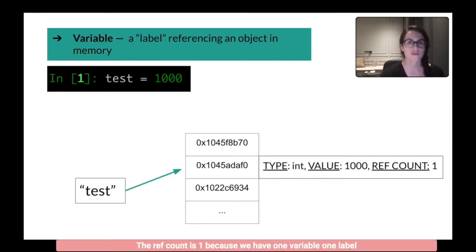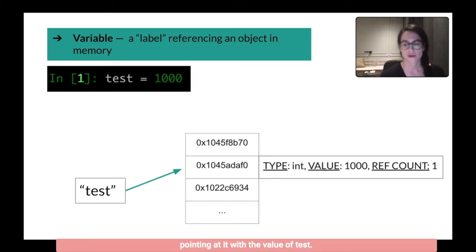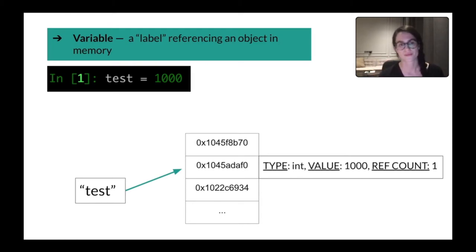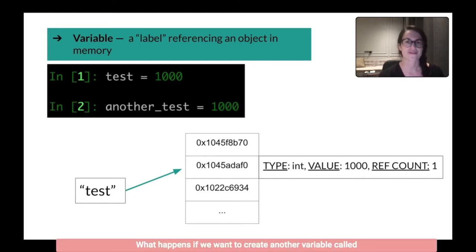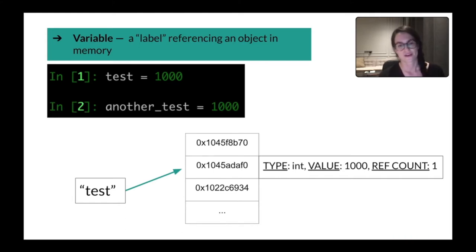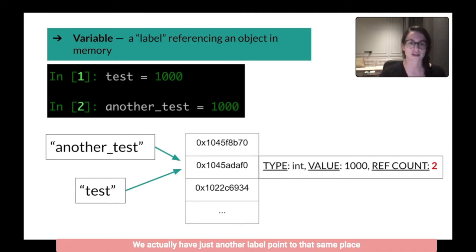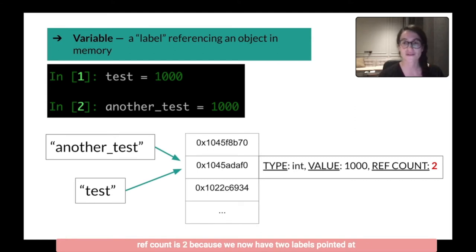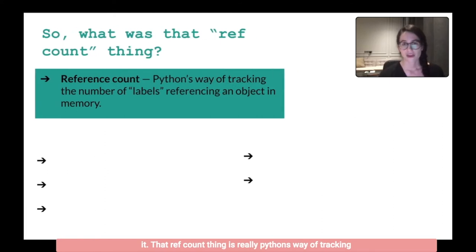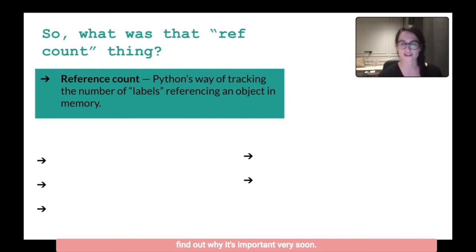The ref count is one because we have one variable, one label pointing at it — the value of 'test'. What happens if we create another variable called 'another_test'? The Python memory manager gets a little clever. Instead of duplicating that value, we actually have just another label pointed at the same place in memory. You can see that now the ref count is two, because we now have two labels pointed at it. The ref count is Python's way of tracking the number of labels that reference an object in memory.